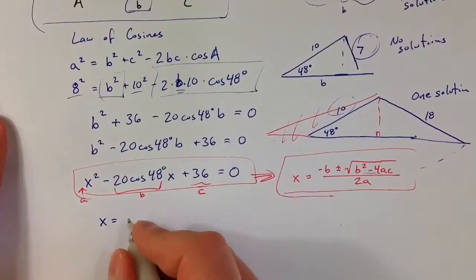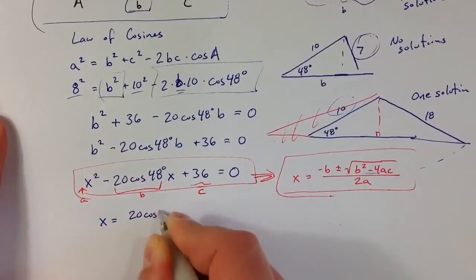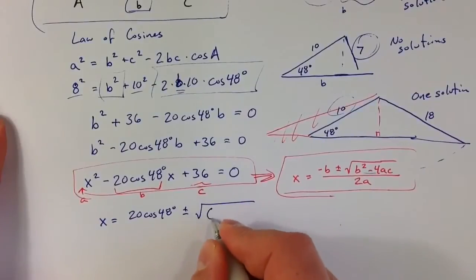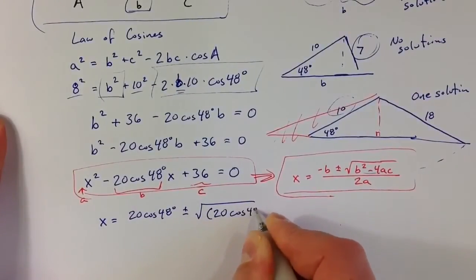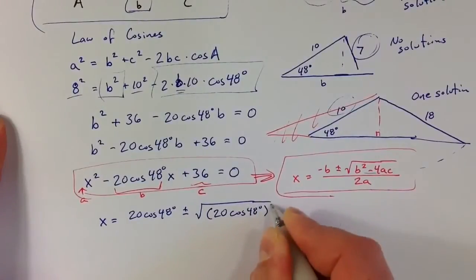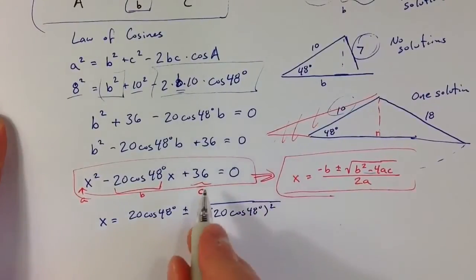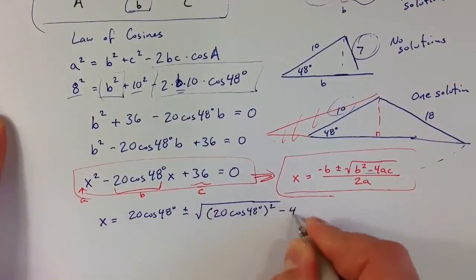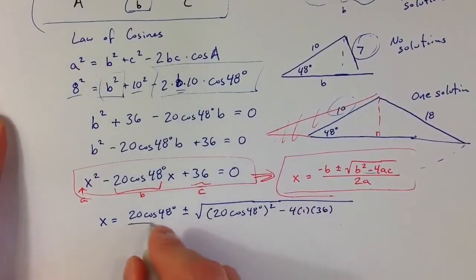So to solve for our variable, x is equal to—well, I have a minus sign in front, so that's going to become a positive 20·cos(48°), plus or minus the square root of that whole thing squared, 20·cos(48°) squared, minus 4AC. Of course A is just 1, so I get minus 4·1·36, all of that divided by 2.